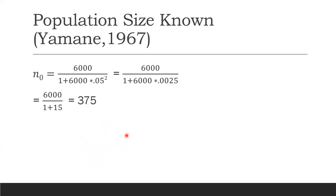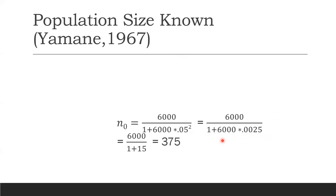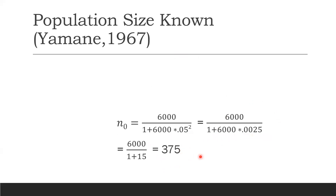We put all the values into the formula: 6,000 divided by 1 plus 6,000 multiplied by (0.05)². Calculating this, my adequate sample size comes out to 375. So a sample of 375 is sufficient to know the characteristics of a population of 6,000.